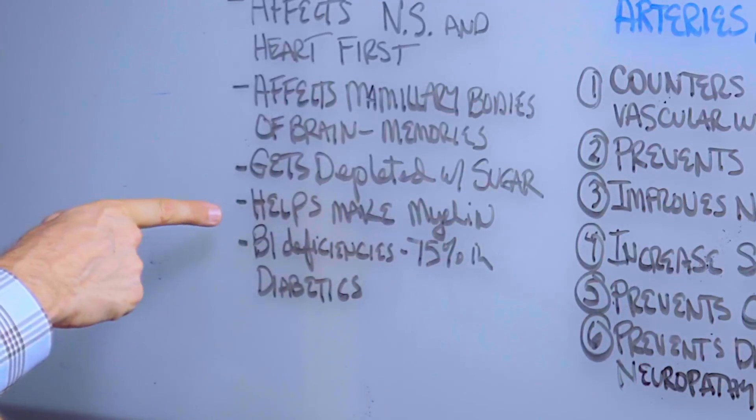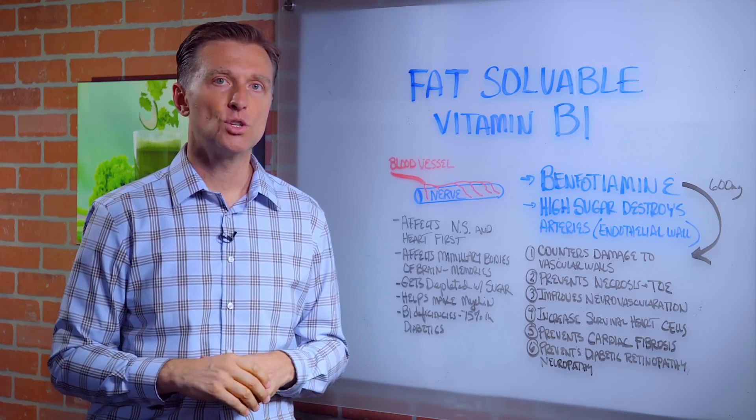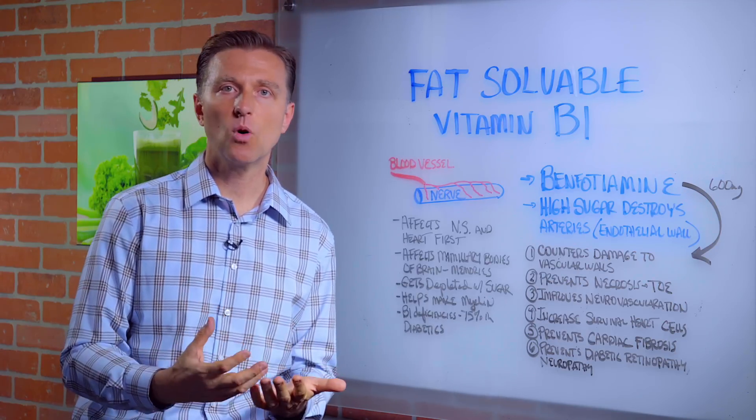Vitamin B1 is also involved in making myelin, which is the insulation around the nerve. So when you're deficient in B1, you lose the myelin sheath. You can't grow that anymore.